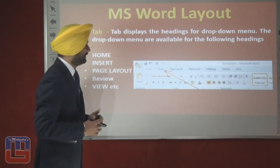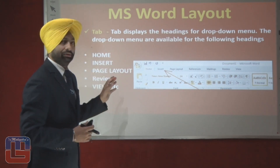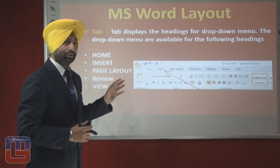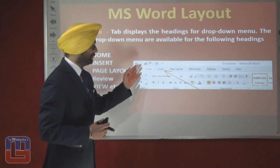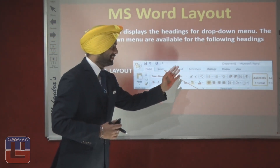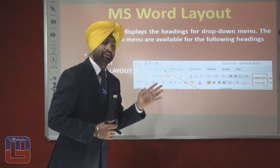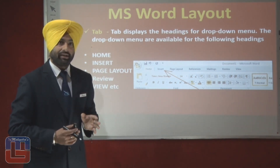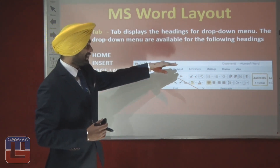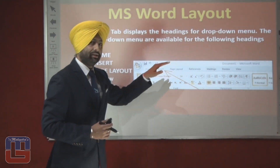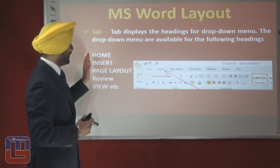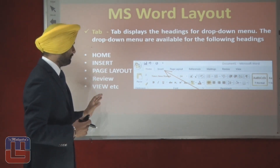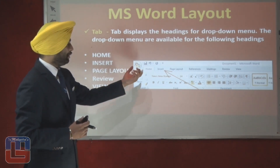Moving to the next slide, we have the tabs. The various tabs available in MS Word 2007 are: Home, Insert, Page Layout, References, Mailing, Review, and View. These tabs are located just below the title bar — that is a point to be remembered. Each tab contains various options within it.